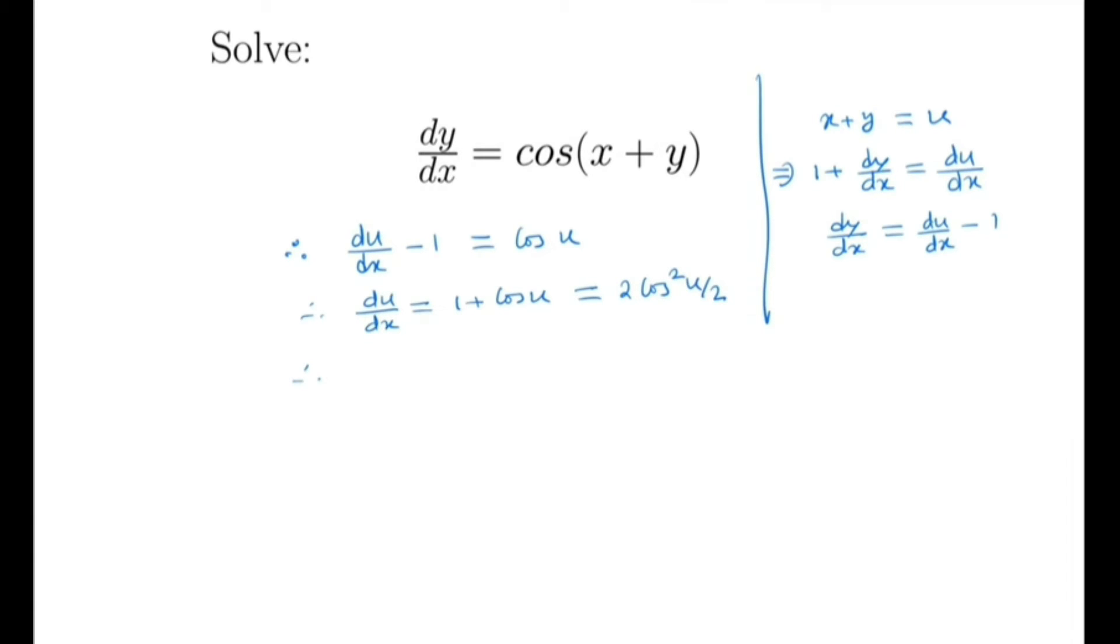Now we get a separable differential equation. We separate u and x: du over cos squared u over 2 equals 2 dx.